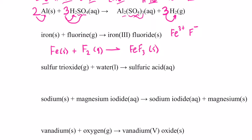Now that we have the formulas we can balance: one iron on both sides, two fluorines on the left and three on the right. The common multiple of two and three is six — put a three in front of F₂ to give six fluorines, and a two in front of FeF₃ to also give six fluorines. Balanced.